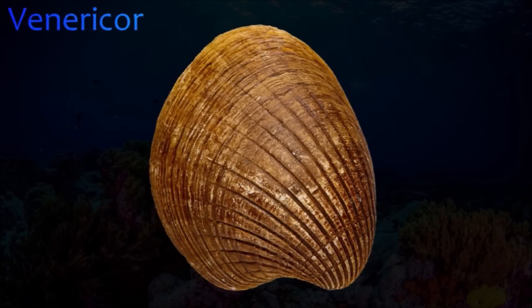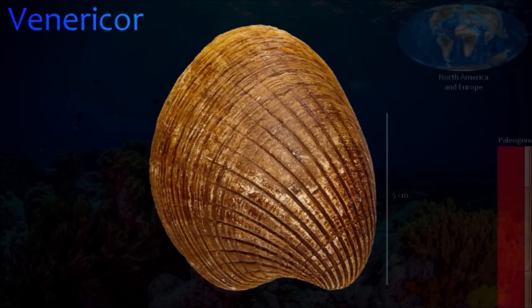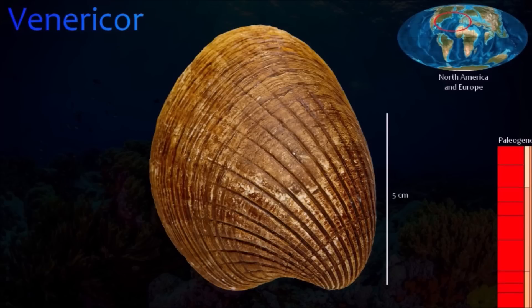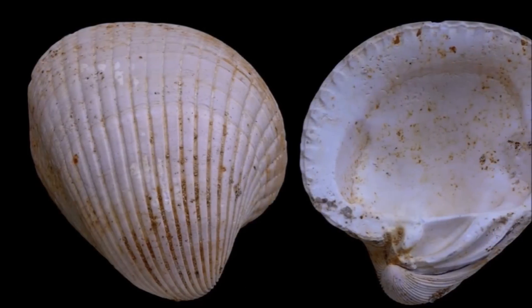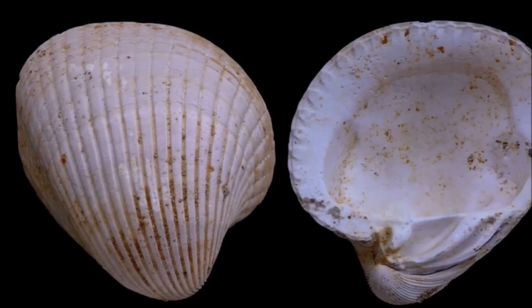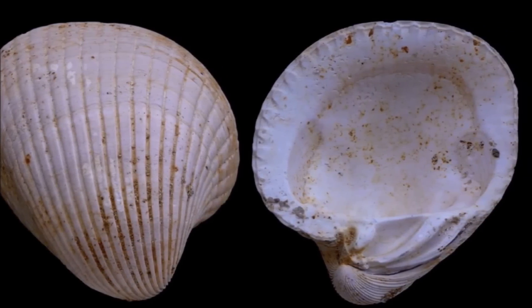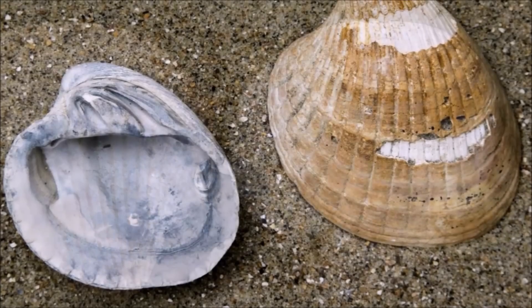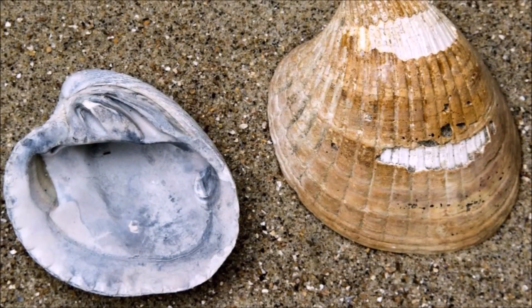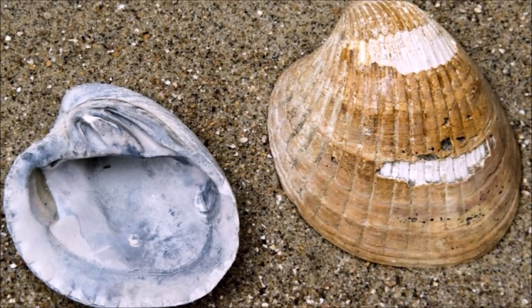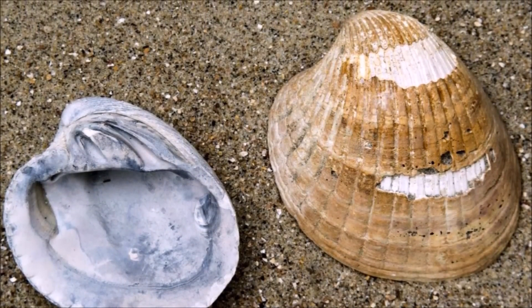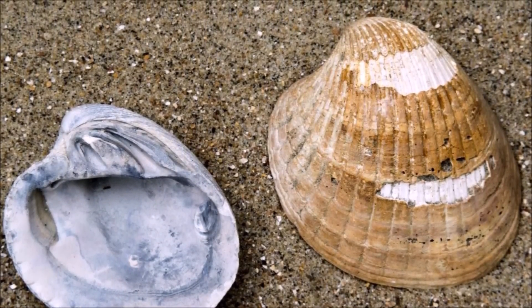Veneracore was a filter-feeding bivalve. Its shell was a rounded triangular shape with forward-facing, curved beaks. The outside of the thick shell had strong radial ribs that became broader and flatter toward the ventral margin. It had two teeth and sockets in each valve. Behind the teeth, a long curved depression housed the ligament. The interior margins of the valves had small crenellations.